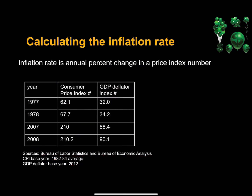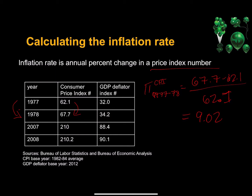How do we find the inflation rate? We find the inflation rate by calculating the percent change in a price index number, and we can do that year to year. So let's calculate the inflation rate from 1977 to 1978 using the CPI. The CPI inflation rate over that period — percent change — is about 9.02%. So the inflation rate calculated using the CPI is 9.02%.